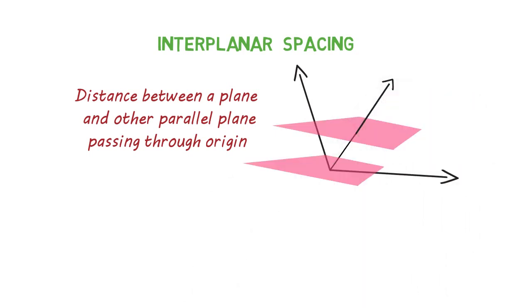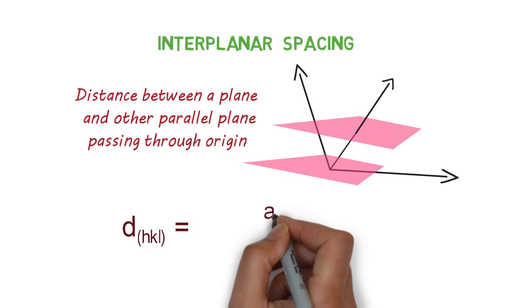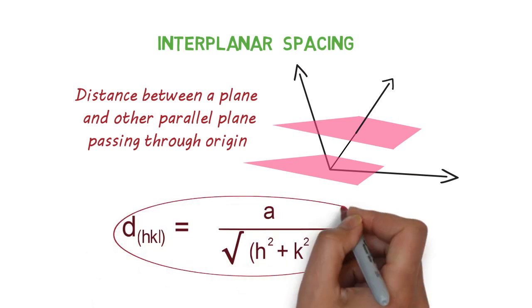If we have a plane with Miller Indices as h, k, and l, then the interplanar spacing d(hkl) can be given by a divided by square root of h squared plus k squared plus l squared. Here a is the edge length of unit cell.